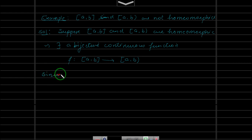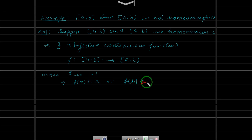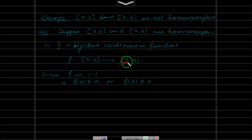Since f is one-to-one, this implies either f(a) is not equal to a, or f(b) is not equal to a. That means if f(a) equals a, then f(b) will not equal a, and if f(b) equals a, then f(a) cannot equal a.